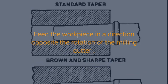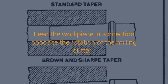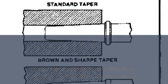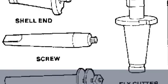Milling is the process of machining flat, curved, or irregular surfaces by feeding the workpiece against a rotating cutter containing a number of cutting edges.